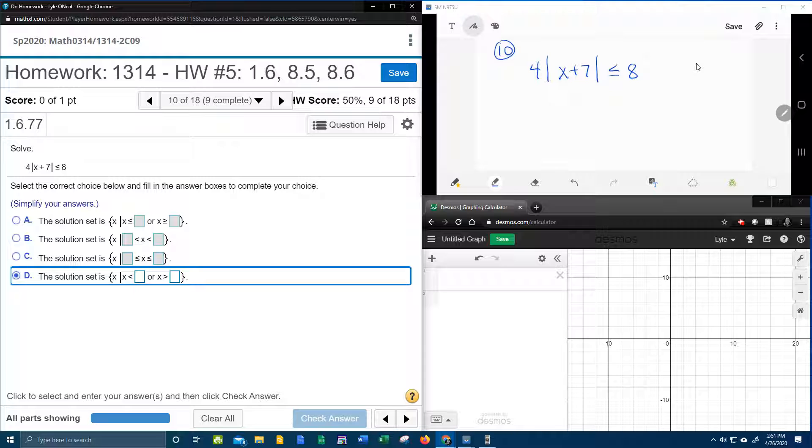The first thing you have to do when you're solving an absolute value inequality is isolate the absolute value. So we can see this absolute value has a coefficient of 4, so I'm going to divide both sides by 4 to get those 4's to cancel. That's going to leave me the absolute value of x plus 7 less than or equal to 2.